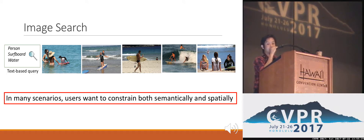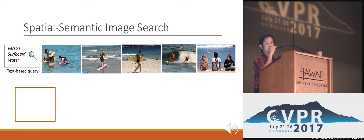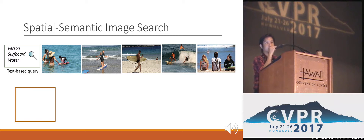However, we note that in many scenarios, users often want to constrain not only what visual elements to include in the search results, but also how those elements are spatially arranged. For example, let's say we want to search for images with a person, surfboard, and water.